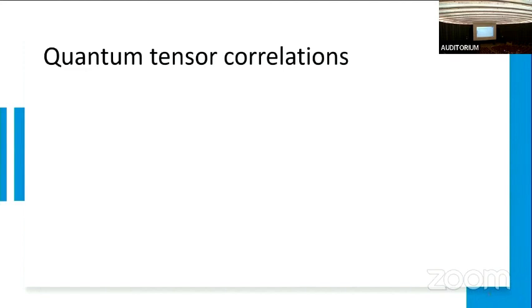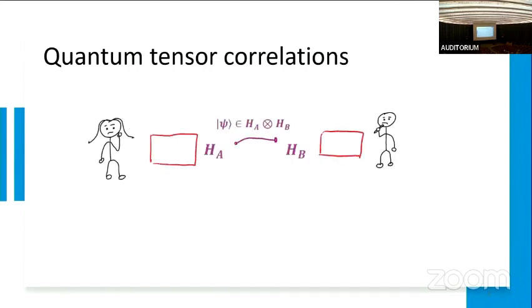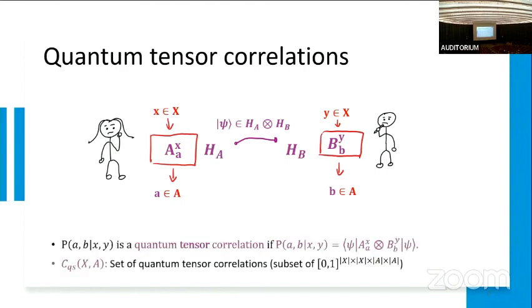Since we work on quantum information, the most common form of correlation we'll see is something called the quantum tensor correlation. In this case, Alice and Bob will pre-share some state psi within the Hilbert space HA tensor HB. Having received X and Y, they would make measurements on their own respective Hilbert space. Alice would make measurement A_X^A onto her half HA, and Bob would make measurement on his half HB. Based on their measurement outcome, they output the answer A and B accordingly. We call any probability distribution that can arise in such an experiment a quantum tensor correlation.